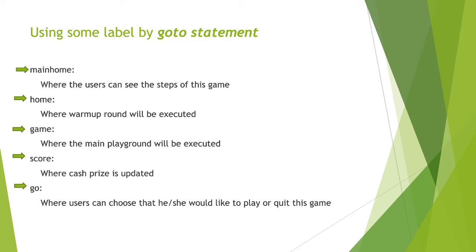There are several levels using the goto statement: the main home level where users can see the steps of this game, the home statement, the game statement, the score statement, and the go statement. In the go statement, users can choose whether they would like to play or quit the game.